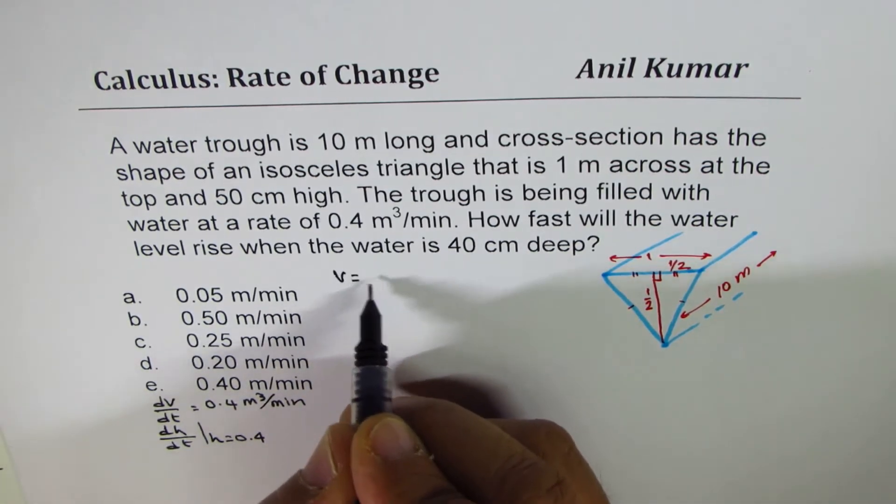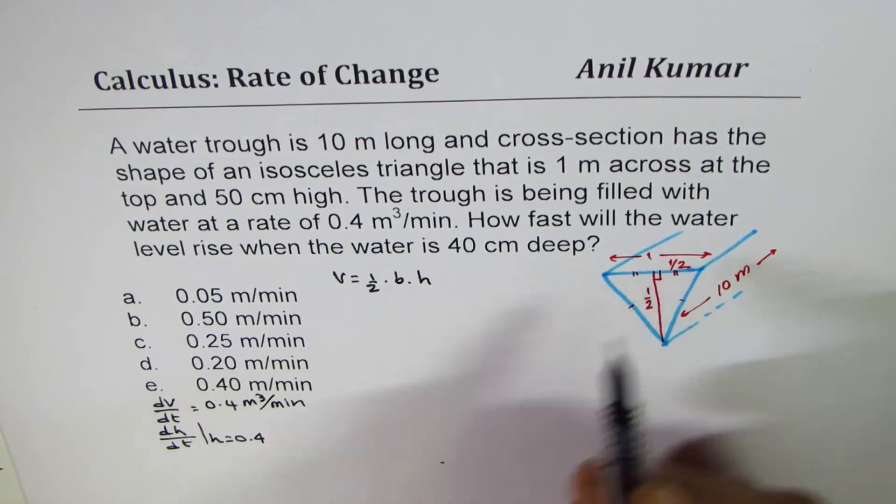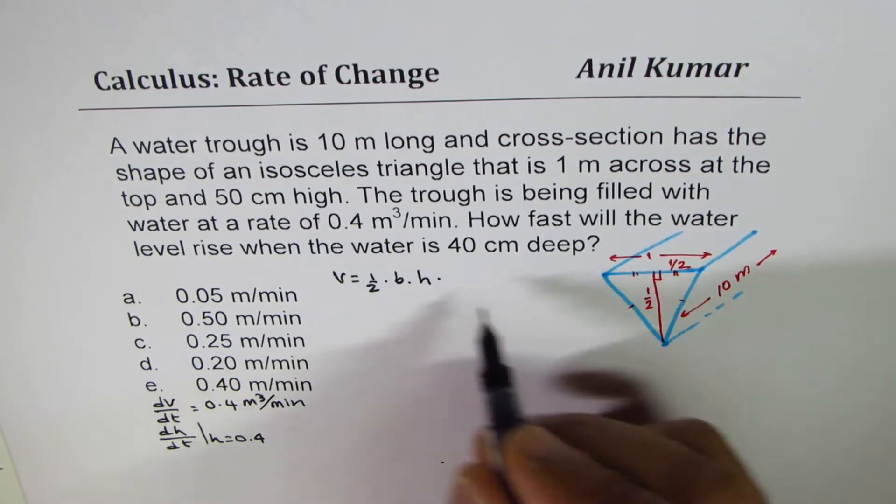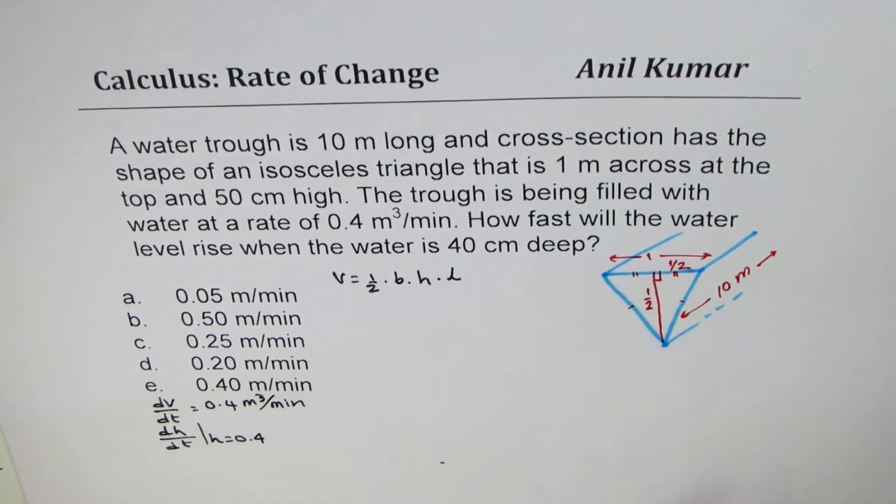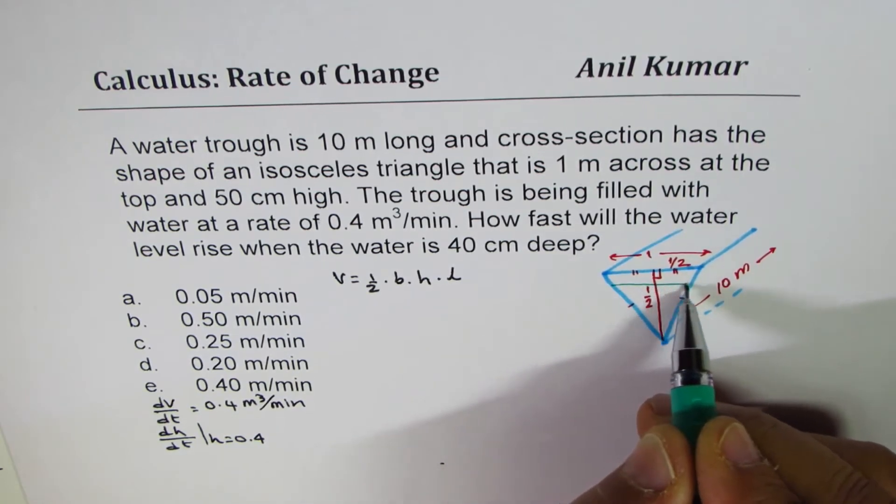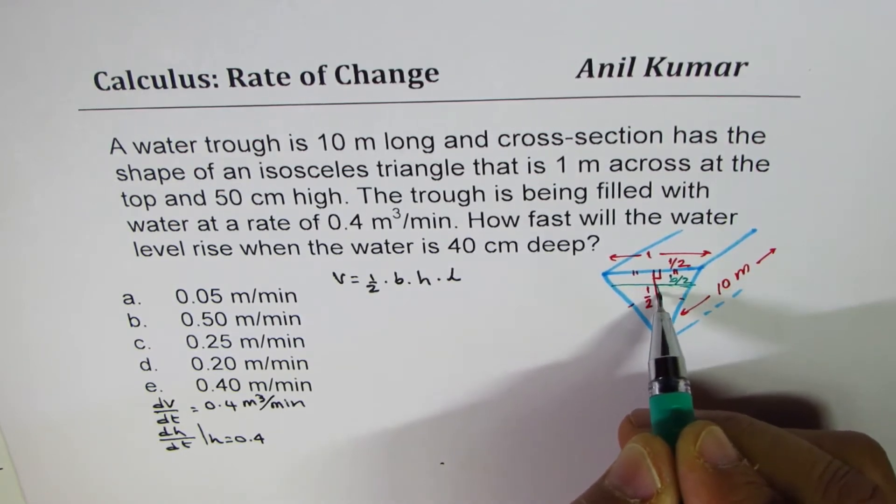So volume is equals to half base times height for the triangle and times the length L. Now we have two variables base and height. So at any instance, let us say base is this for us. So if this is the base, then half of it will be the base of this triangle.